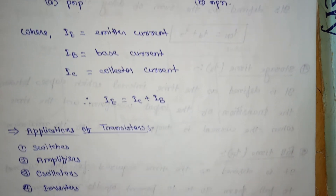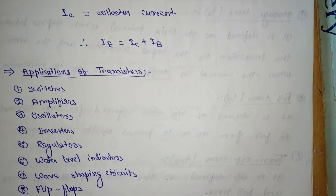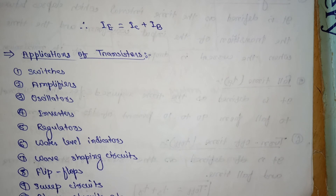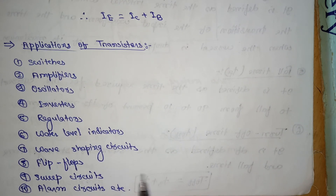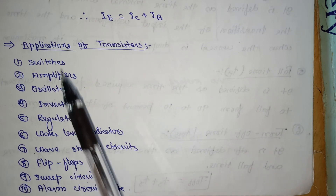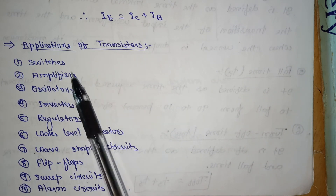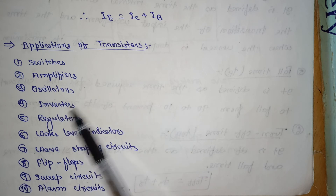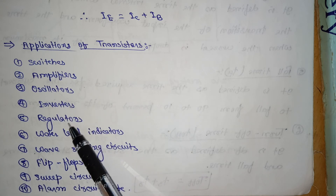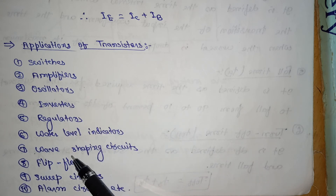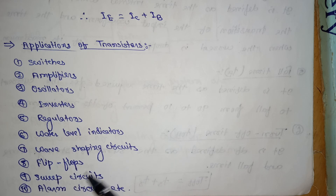Next, applications of transistors. A transistor can be used as a switch, amplifier, oscillator, inverter, regulator, water level indicator, wave shaping circuits, flip-flops, switching circuits, alarm circuits, and more.